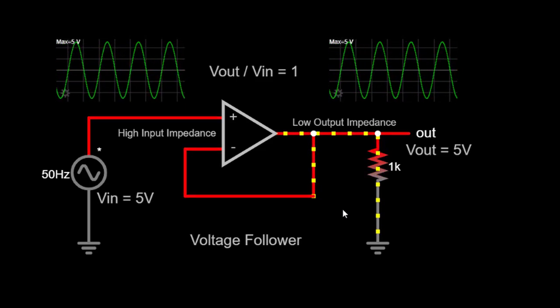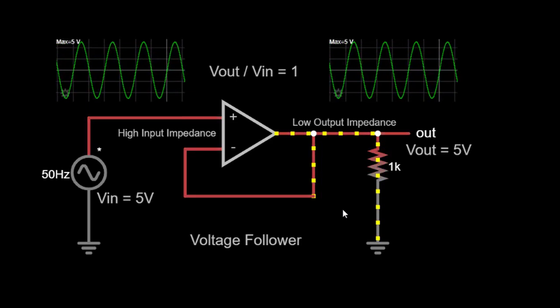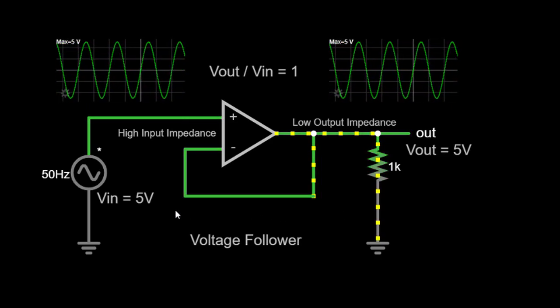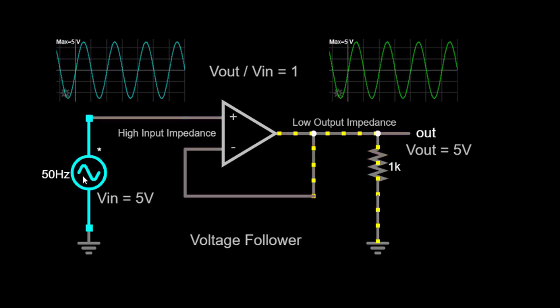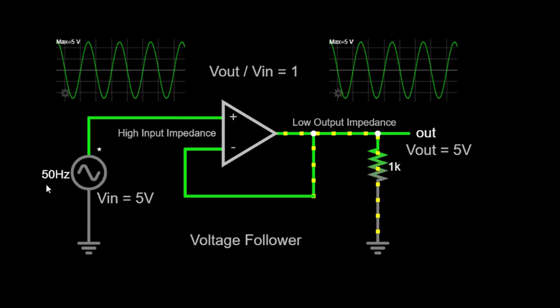Now, let's move on to our simulator circuit to demonstrate the voltage follower in action. In this circuit, we have an input voltage source of 5 volts AC with a frequency of 50 hertz.